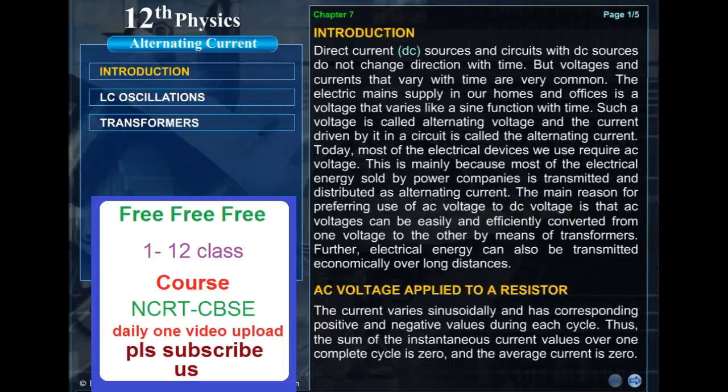Today, most of the electrical devices we use require AC voltage. This is mainly because most of the electrical energy sold by power companies is transmitted and distributed as alternating current. The main reason for preferring use of AC voltage to DC voltage is that AC voltages can be easily and efficiently converted from one voltage to the other by means of transformers. Further, electrical energy can also be transmitted economically over long distances.